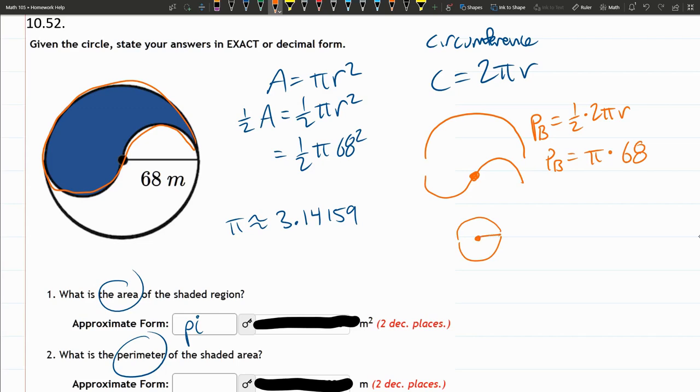So this radius is half of 68, which is 34. So this one will be 34. Now on this, I'll call this the perimeter of the small PS, perimeter of the small.